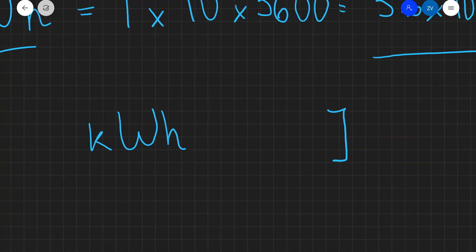In practice, this means that if you wanted to convert kilowatt hours to joules, all we would need to do is multiply by 3.6 times 10 to the power of six.